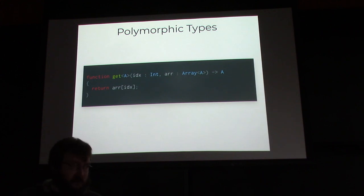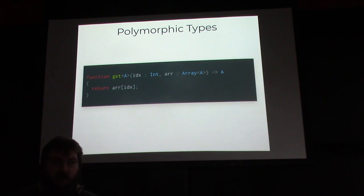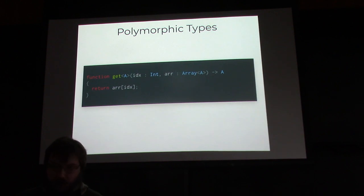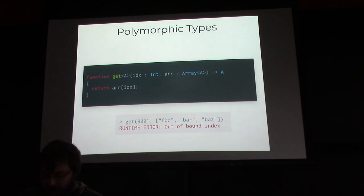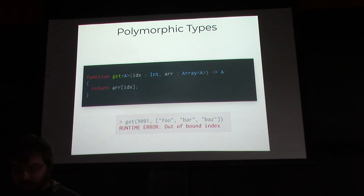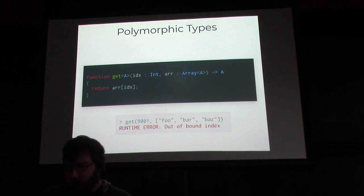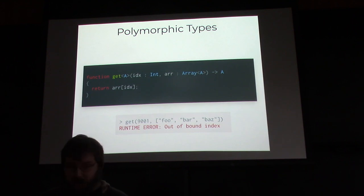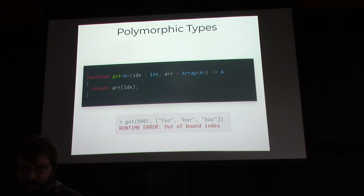Languages like Rust and Haskell have this, but most typed languages stop at polymorphism as their type-level expressivity. But this still doesn't prevent runtime errors, because if we call get with an array that's smaller than the index — say a really big index like 9001 but our array is only three elements long — we're going to get an out-of-bounds runtime index error.